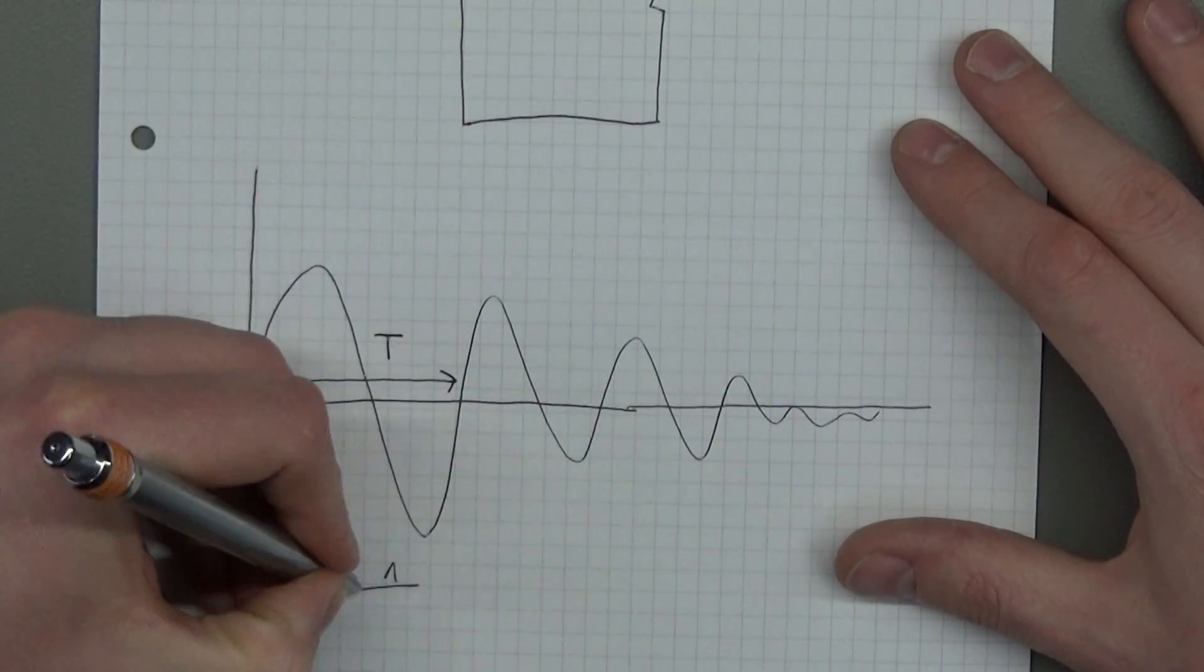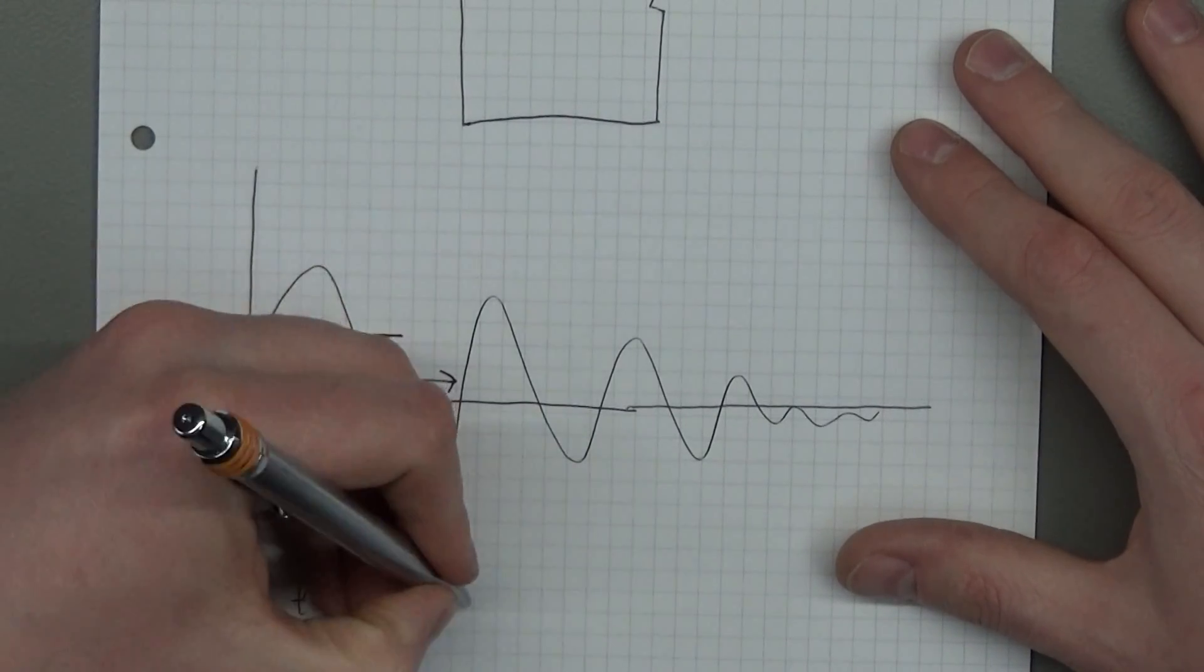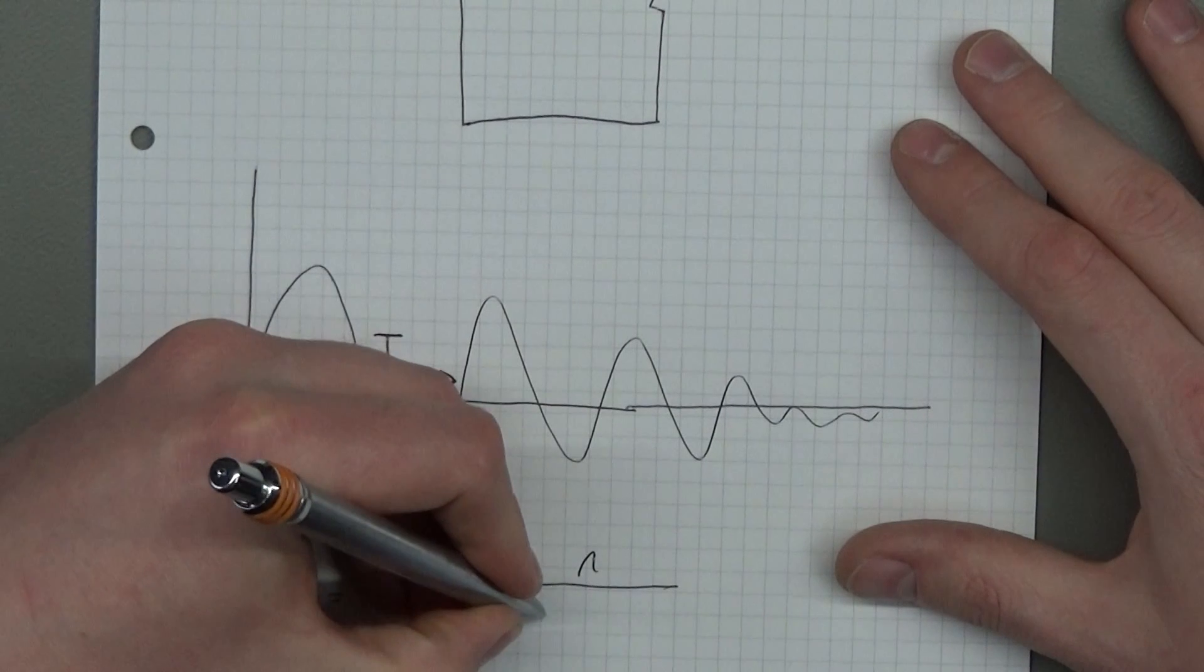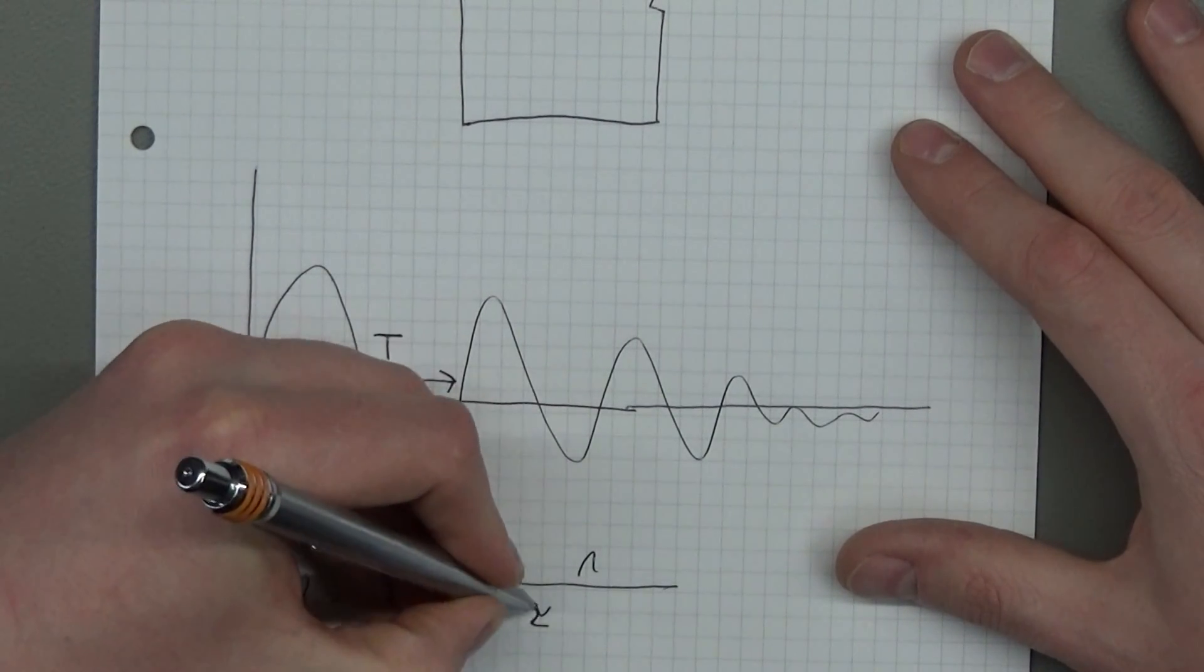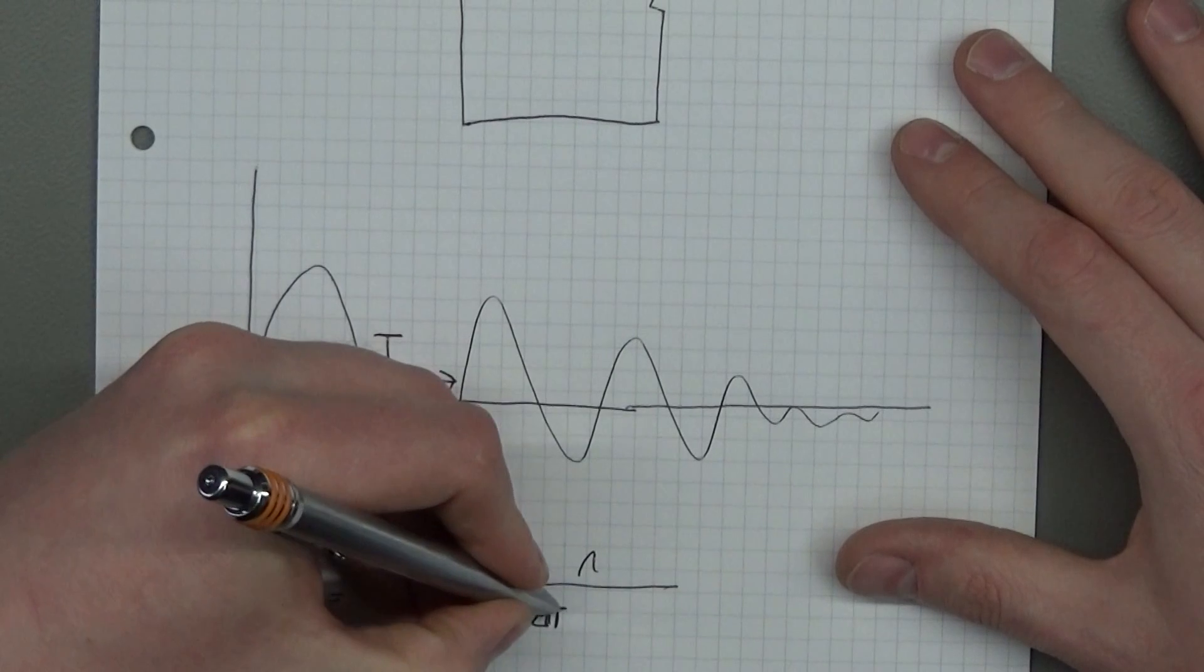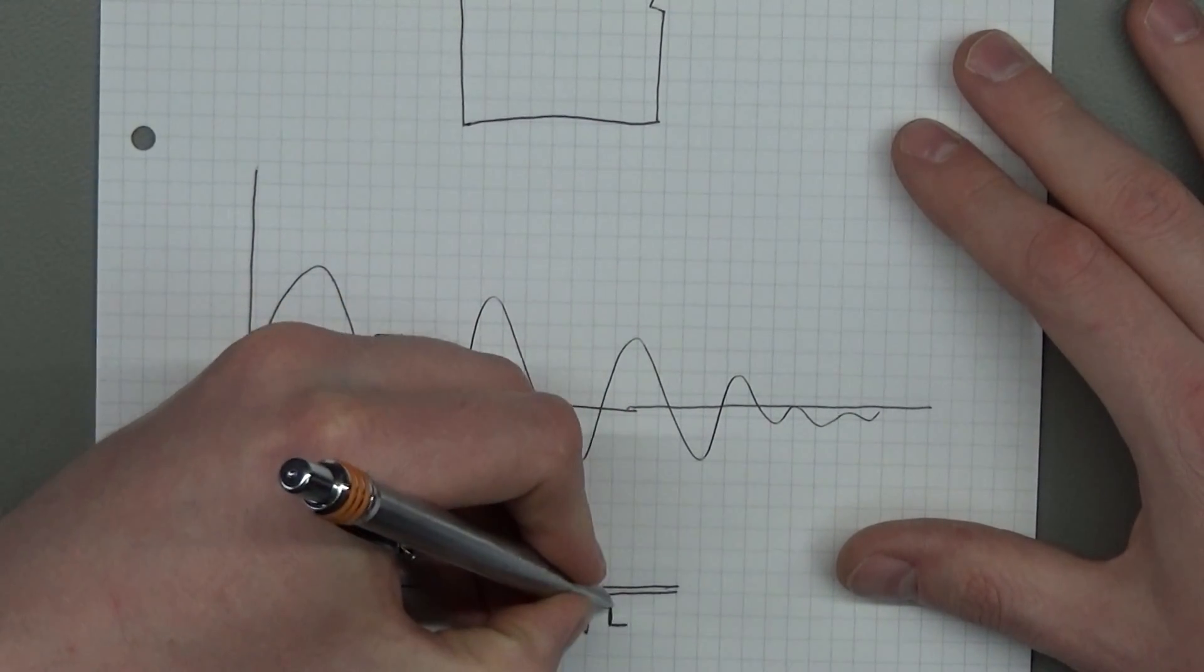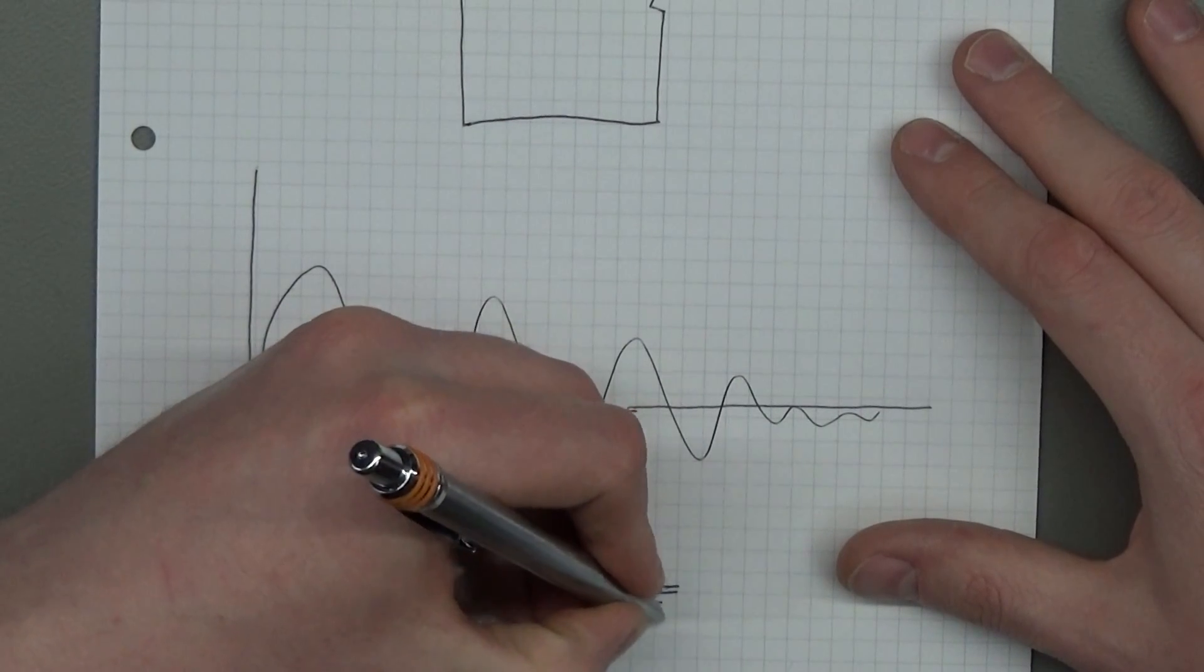It's 1 over 2 times π multiplied by the square root of L times C.